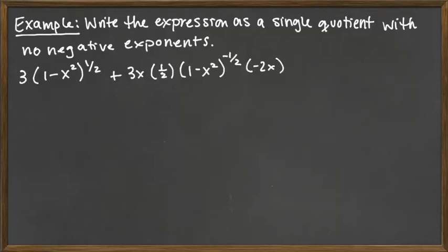The directions for this example are to write the expression as a single quotient with no negative exponents. The directions call our attention to the only negative exponent in the given expression — that negative 1 half power. Negative exponents mean we can push that factor down to the denominator and switch to a positive exponent. So that's going to be one of the first things we do here.